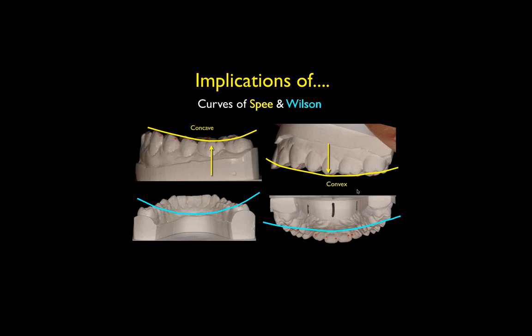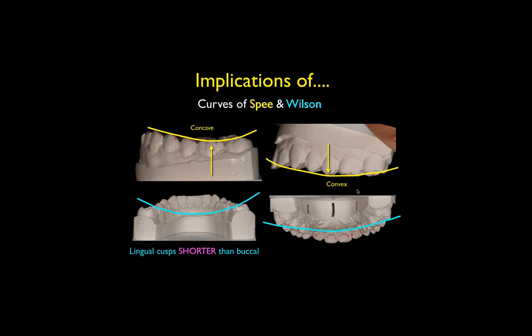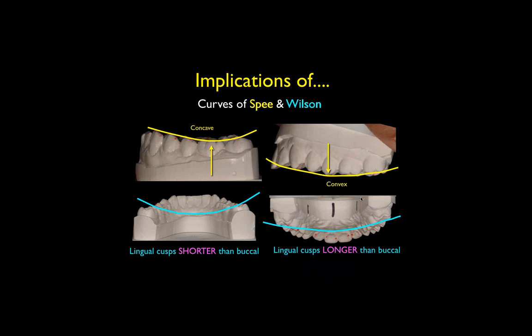Somewhere in that area should be the longest point on the arch viewed from the buccal. As far as the Wilson curve goes, the concave curve on the lower defines the lingual cusp as being shorter than the buccal cusp — which is the first great mistake people make. Typically when I see carvings of posterior teeth, the lower lingual cusps are just too long, and sometimes you get interferences in working movements. The convex curve on the upper defines the lingual cusp of the upper posterior teeth as being longer than the buccal cusp.